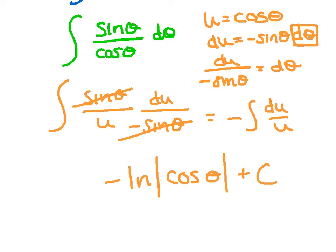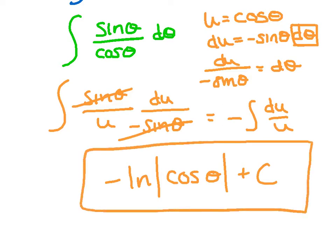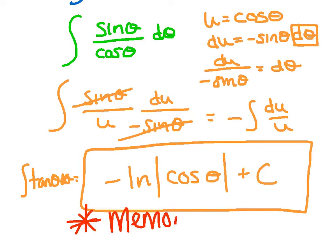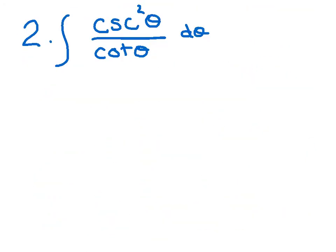So, I get negative ln. I'm going to substitute my u back in, which is cosine of theta plus c. Now, believe it or not, this is one you should probably memorize. It's going to pop up quite a few times. I would ingrain in your head that the integral of tangent is negative ln of cosine theta plus c.